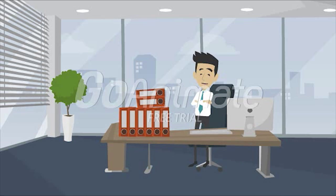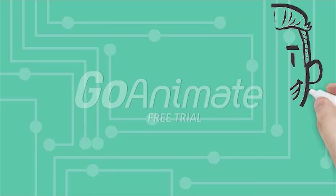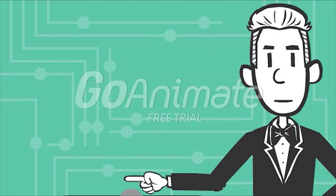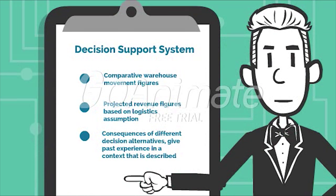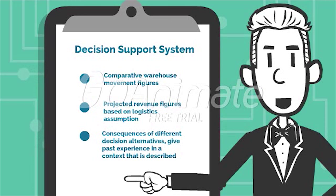With the decision support system, James is now able to make the right decisions as a senior manager and will not let his dad down. Through this system, they are able to make comparative figures, projected revenue figures, as well as visualize consequences of different decision alternatives.